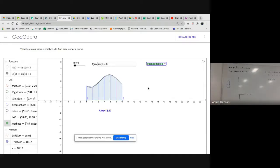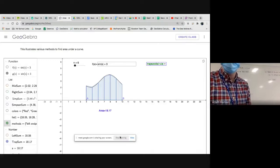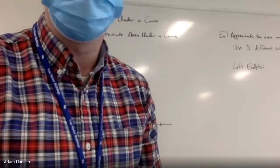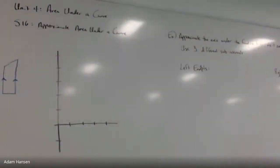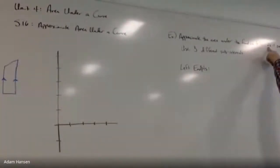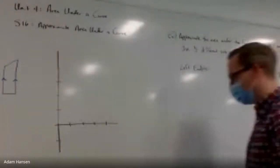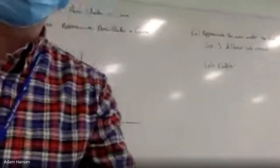Trapezoids are a different shape altogether. I fit trapezoids into the region — I have two bases, like a rectangle, but use the leg of the trapezoid to fit the curve. Let's practice a few of these for a given function. Approximate the area under f(x) = 2x − 1 on the interval from 1 to 4, using three different subintervals with left endpoints, right endpoints, midpoints, and trapezoids.